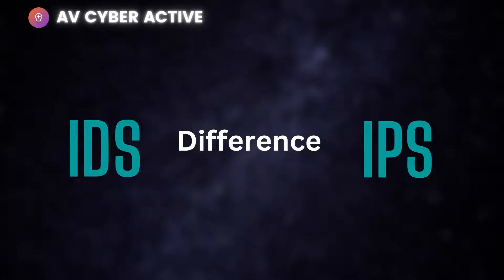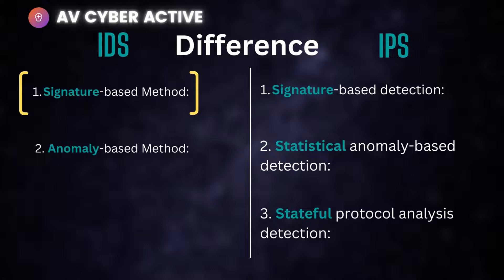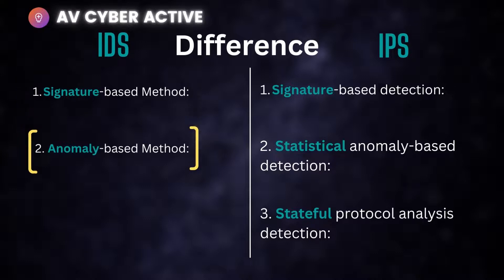Now, what are the key differences between IDS and IPS? Starting with IDS — it works on a signature basis, meaning signature updates that you receive from your vendor on a daily or sometimes multiple-times-a-day basis. These are specific patterns that an IDS device looks for and then alerts the system or forwards logs to an alerting solution. The next method is anomaly-based detection.